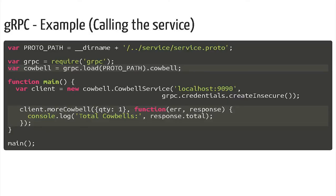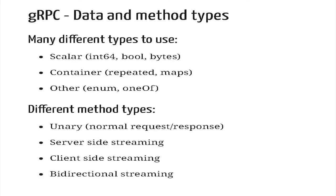Calling the service — creating a client — you also import the generated functions, then you instantiate one instance of it, tell it where the server is, and then you can start doing your calls. Other things that gRPC supports: you can use scalar types — int64, JSON — int64 translates to a string in JSON. You can use booleans and byte arrays. There are also containers like lists, which they call repeated fields, or maps, which is a key-value pair. You can also use more complex types like enumerations and one-of, which is like a C union.